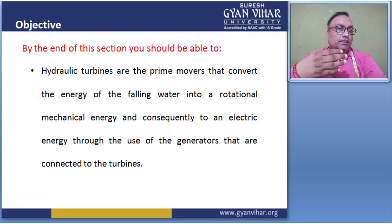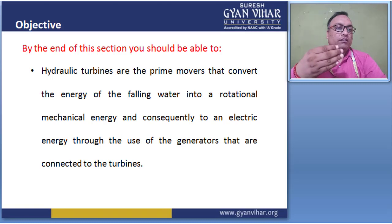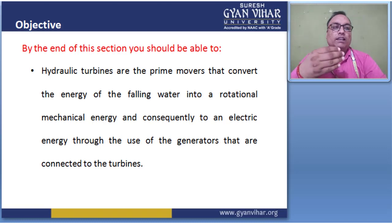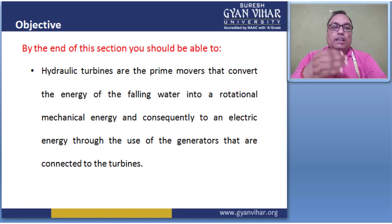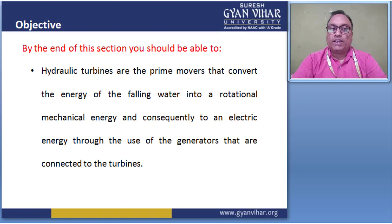It converts energy by moving a prime mover, which converts the energy of falling water into rotational mechanical energy, and consequently to electrical energy through the use of a generator connected to the turbine. The main objective of hydraulic turbines is to convert energy from one form to another. This is your fourth unit in this lecture series.